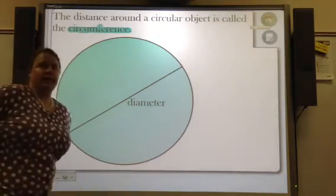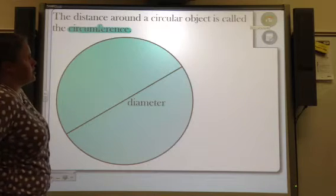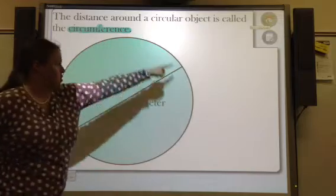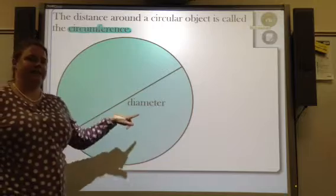So the first thing that you need to know, and we talked about in class, is that the distance around a circular object is called the circumference. So around the circle is the circumference. Cutting through the circle from the center point is the diameter.